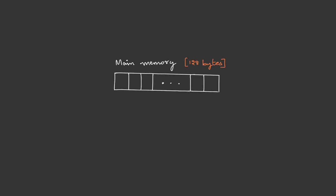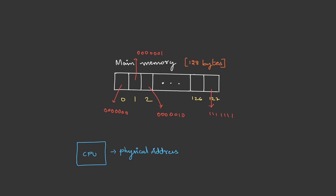Before we start with direct mapping, let's have some basic idea about physical address, main memory, block offset, etc. Let's assume our system has a main memory of size 128 bytes and the system is byte-addressable, which means hardware can access individual bytes. For 128-byte memory, the CPU can generate 128 unique addresses to point to each byte. The address generated by the CPU is called a physical address and is in binary format. Since main memory is 128 bytes, which is 2^7 bytes, we need 7 bits for the physical address.